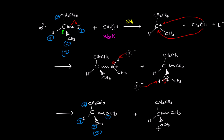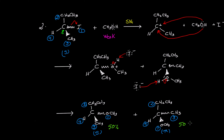For the second product: methoxy is number one, ethyl is two, methyl is three, and hydrogen is four. The lowest priority is in the plane, so I have to switch it with priority three — the methyl comes to this side — I have one, two, three which is counterclockwise, but because I switched the places of these two groups, this is R. This is what we call racemization: equal chances of forming R and S products, giving 50% S and 50% R.